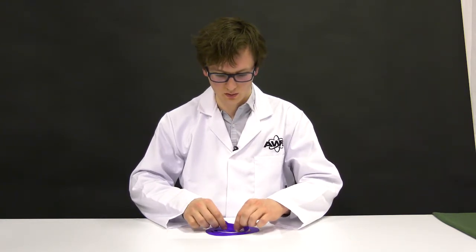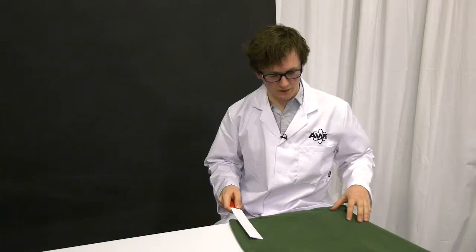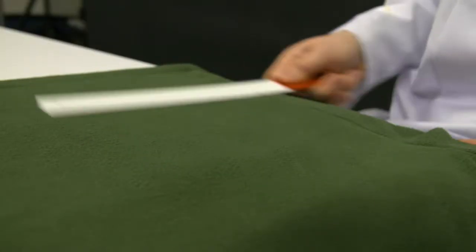So to generate our static electricity, we're going to need a plastic ruler. You can use anything really that's made out of plastic. And we've got a fleece here to rub it against to generate all the friction we'll need.